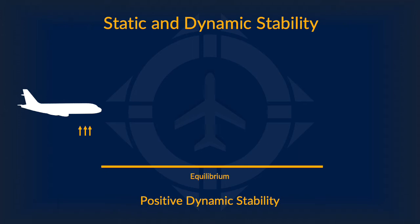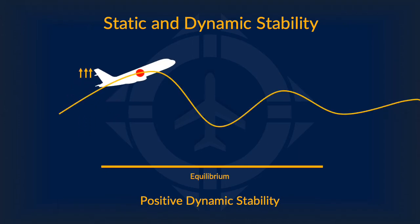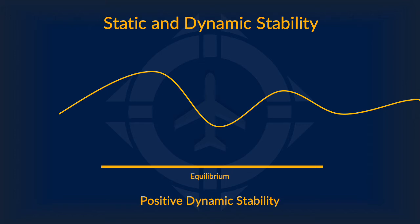Here is a rough depiction of the theoretical line the airplane will follow if its dynamic stability is positive. As one can see, the fluctuations decrease in magnitude over time. This means that without any external forces or action from the pilot, the airplane will theoretically automatically return to its undisturbed state. This is very useful for trainer aircraft as well as cargo planes.